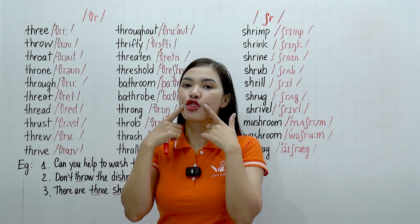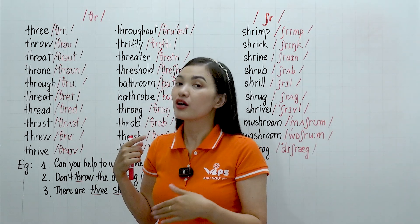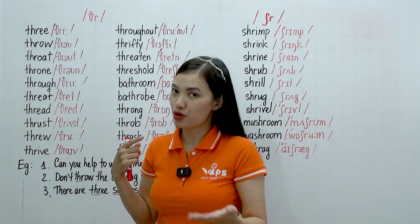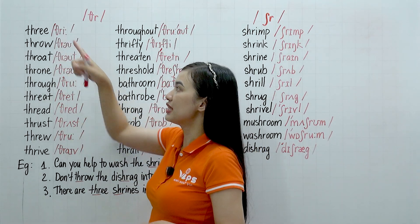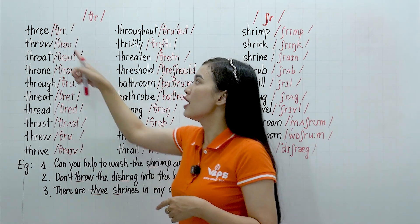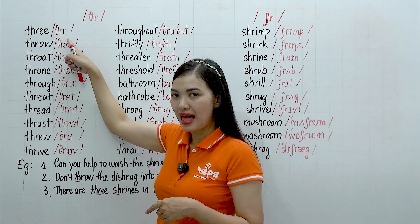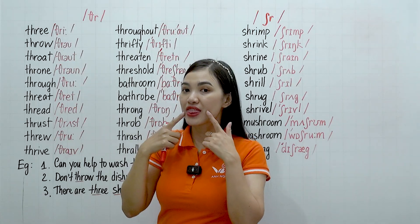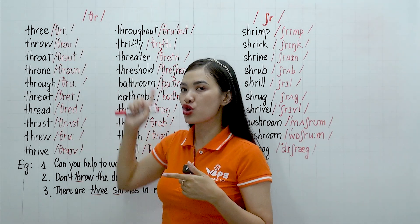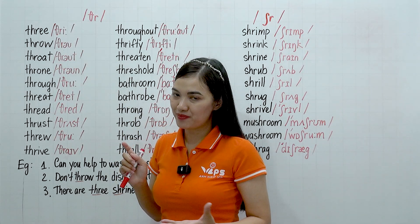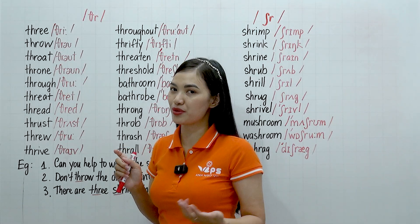Okay, so THR, THR, THR, THR. Faster — THR. And this one: one, two, three. So we have one, two, three. One, two, three.